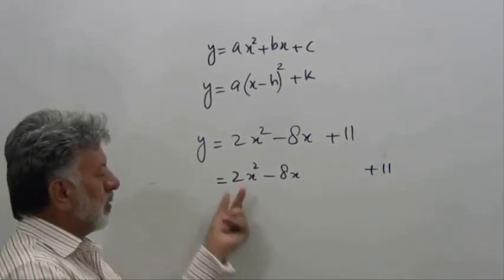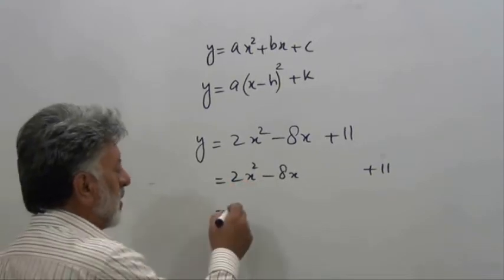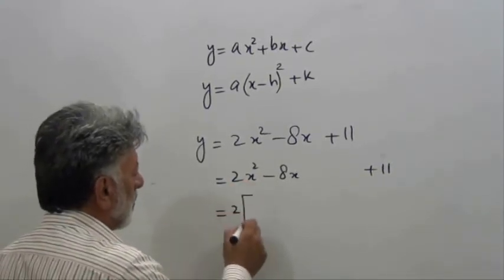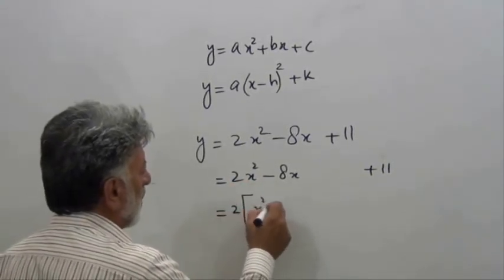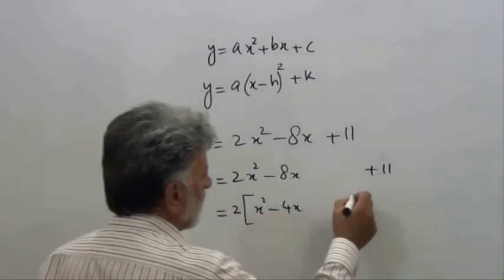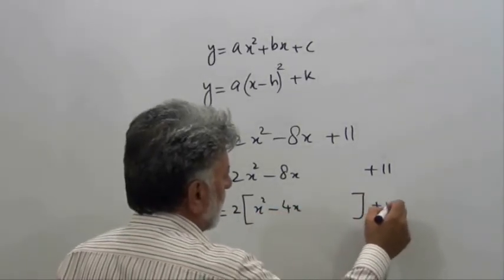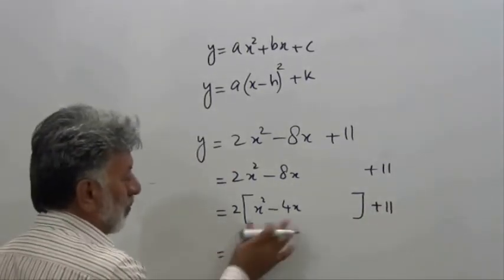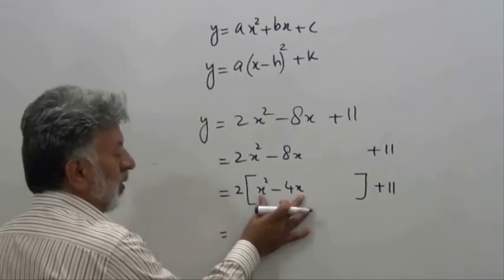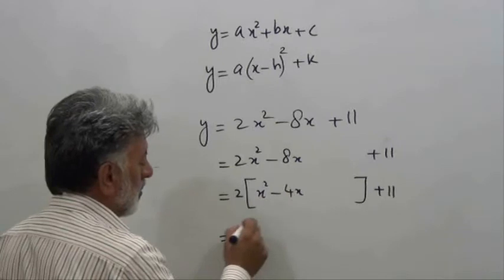So you have x squared minus 4x. By now we would like to complete the square for these two terms. So this is the first term minus two times first term, and we know that dividing four by two we will get the second term.